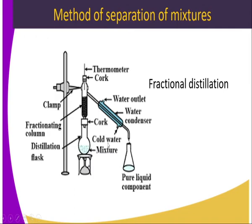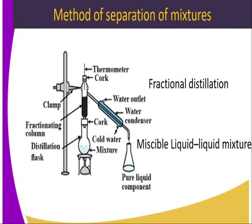In the Liebig's condenser, we have cold water in, which gives us a counter-current flow system to enable condensation to take place efficiently. The water becomes warm and we have warm water out. Down there in the conical flask, we obtain the distillate, which is one fraction of the mixture. This separates miscible liquid-liquid mixtures.